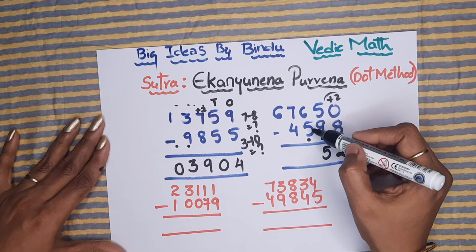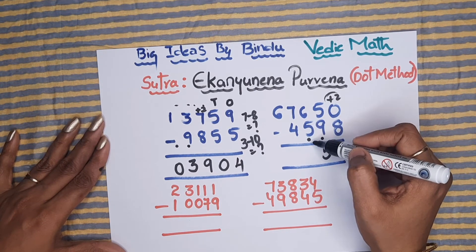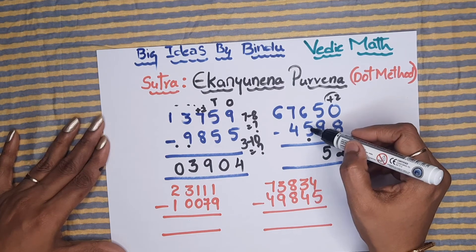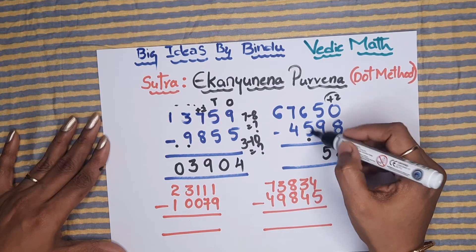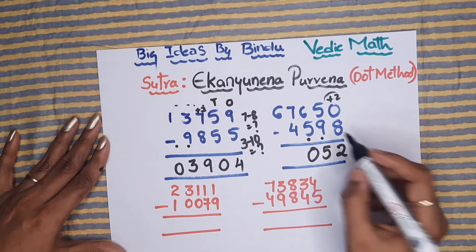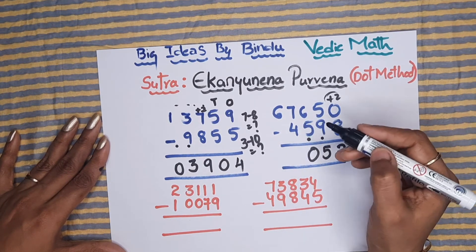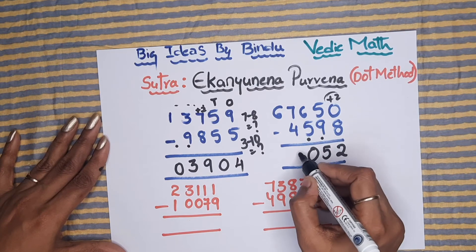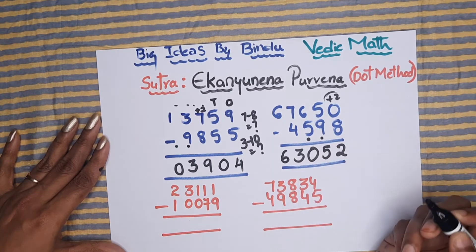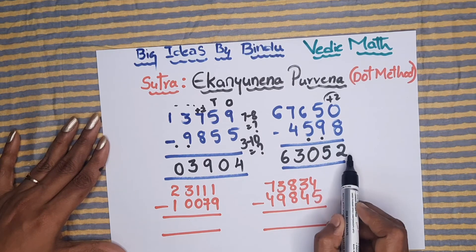Now we reach the next digit. You must count it as 6, not 5 — counting it as 5 would be wrong. So 6 minus 6 equals 0. Then 7 minus 4 is a direct subtraction giving 3. The final answer to the second sum is 63052.